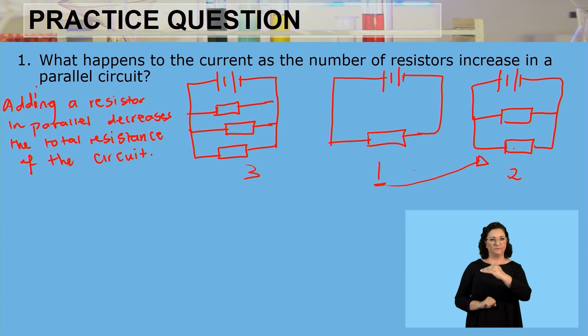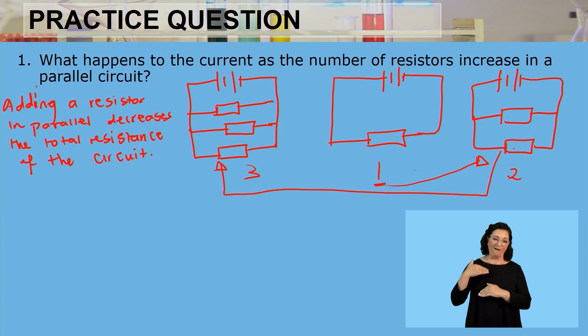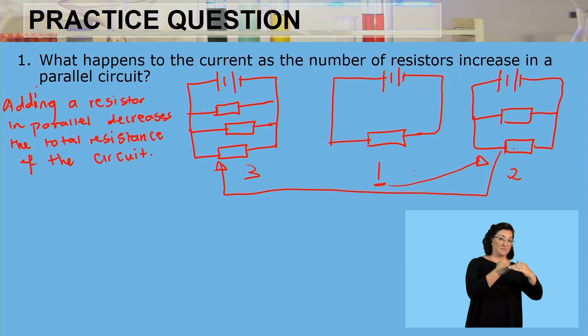Circuit number two will have a much higher resistance compared to circuit number three, because we've also added another resistor. In circuit number three I have three resistors. So if you go on to four and five, the previous circuit will always have a much higher resistance compared to the subsequent circuit, because as we keep on adding more resistors in parallel, the total resistance of the circuit is going to decrease.